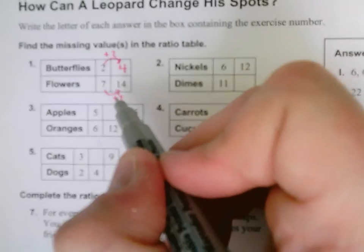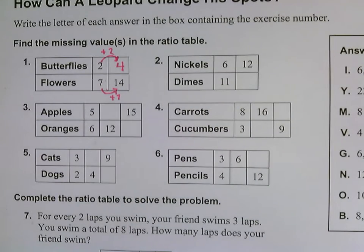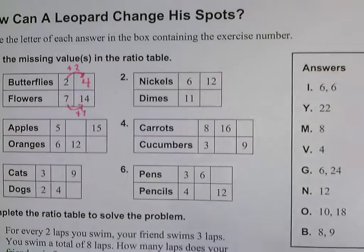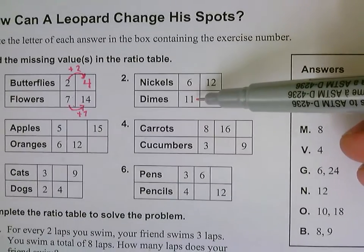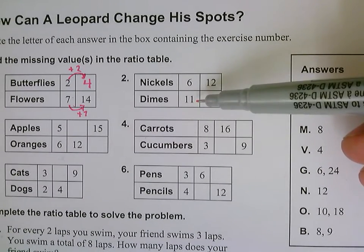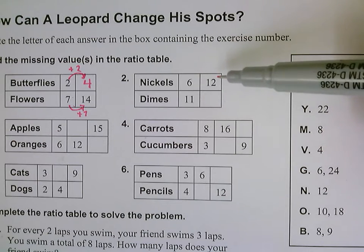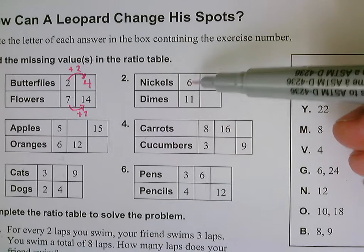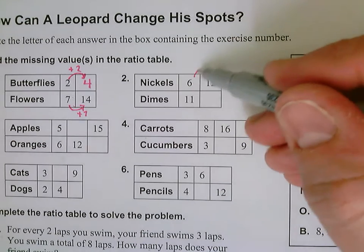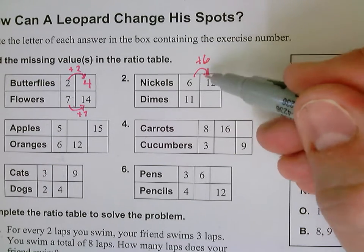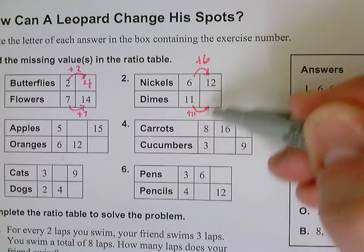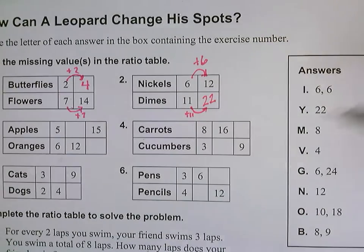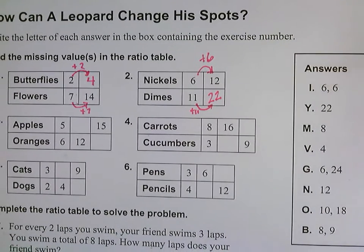Let's take a look at the next one for nickels to dimes. If I have six nickels for every 11 dimes, from six to 12 I've doubled. Six plus six is 12. If I'm doubling, if I'm adding, I have to double the 11. Eleven plus 11 is 22, so I have 22 left in that ratio table.